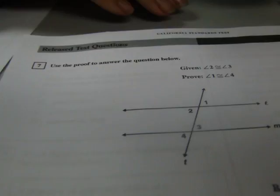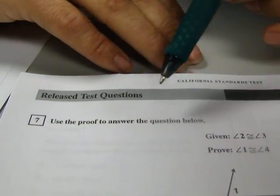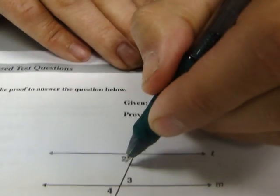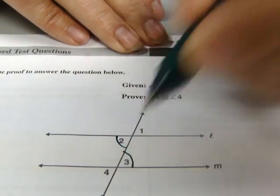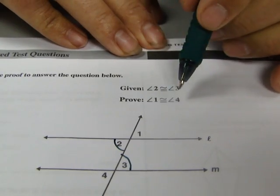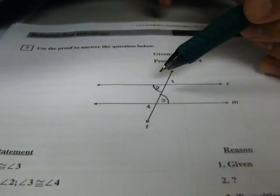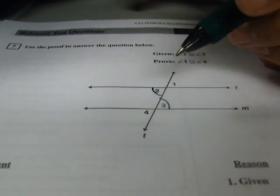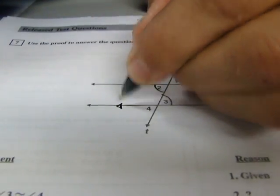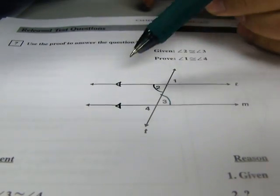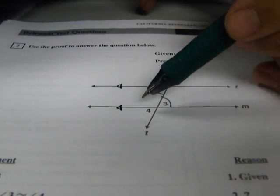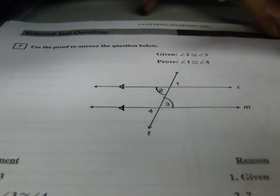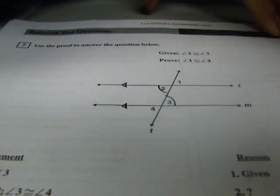Moving on to number seven. Use the proof to answer the question below. Given angle two is congruent to angle three, again, we mark these things immediately. We want to prove that angle one is congruent to angle four. So let's check this out. These are alternate interior angles. If the alternate interior angles are congruent, then the lines are parallel. If the lines are parallel, then one and four, the alternate exterior angles, will also be congruent. So we already know this, so now we're just going to work through how to write it.